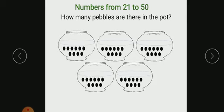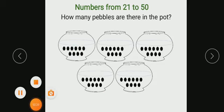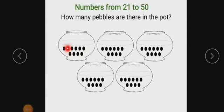See children, there are 5 pots. Each pot contains 10 pebbles. Let us count: 1, 2, 3, 4, 5, 6, 7, 8, 9, 10. So each pot contains 10 pebbles. Here we are not having any extra units. It is 5 tens. That means 50.